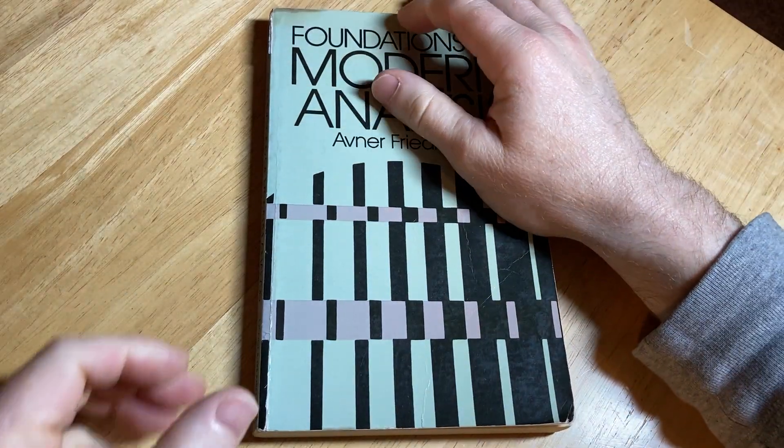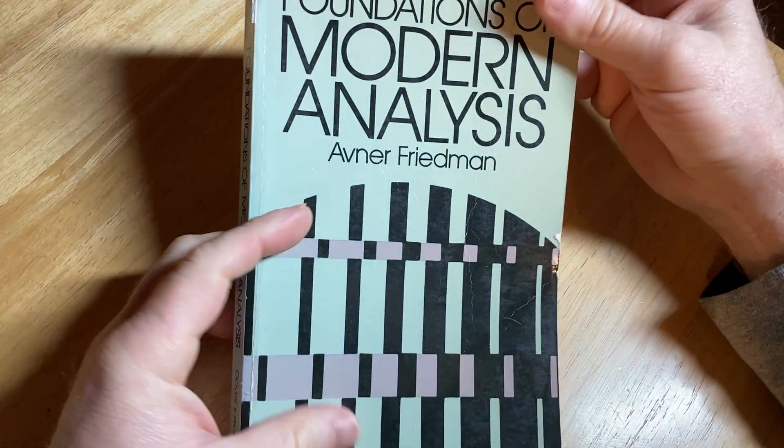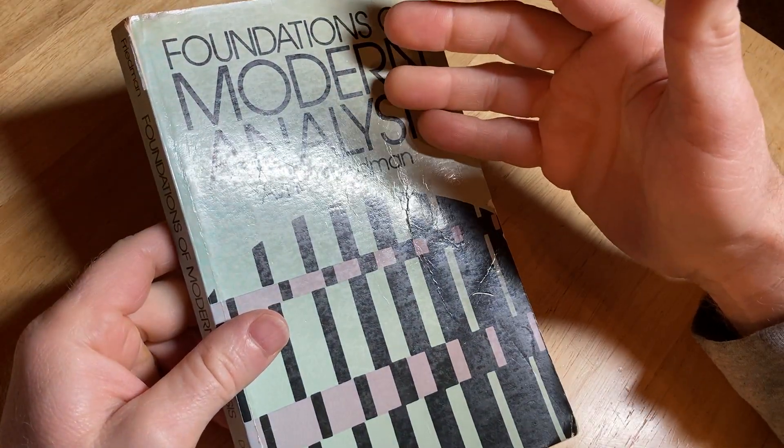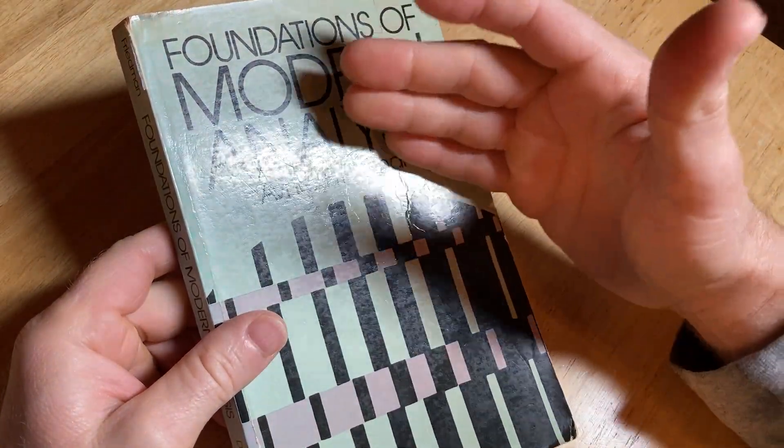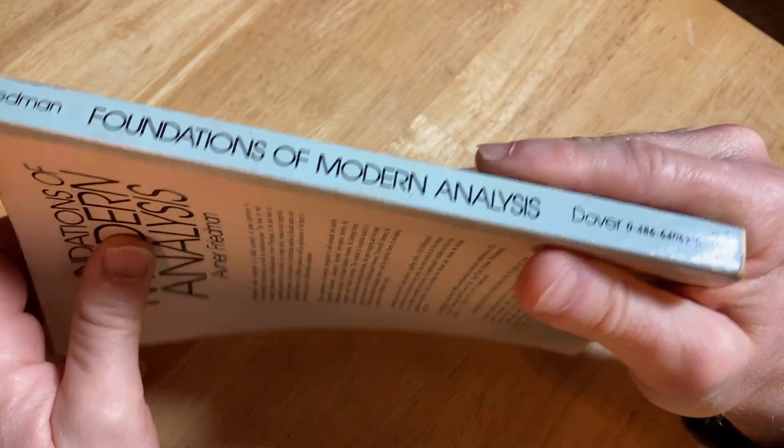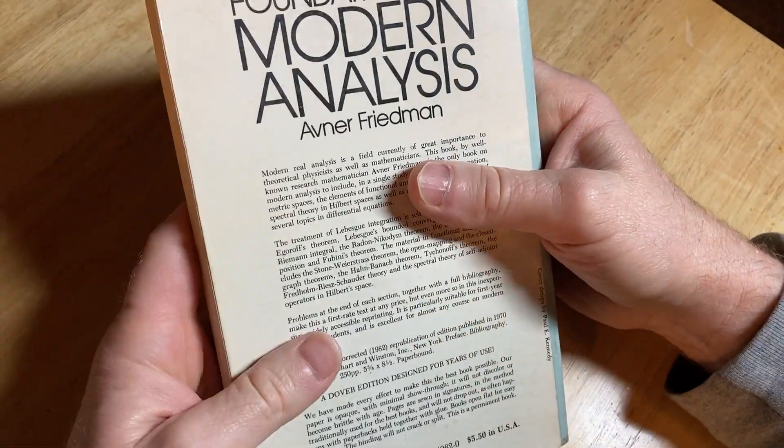This book is a little more advanced than a lot of the other books. It's called Foundations of Modern Analysis. And when I say that, I say it's more advanced than other analysis books because this is meant for graduate students. So this is not like your first course in advanced calculus type book.